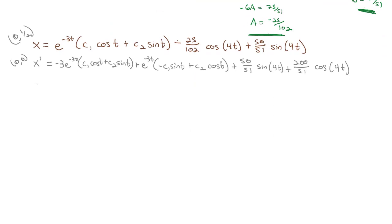Plugging those values in, in the first equation, we end up with 1/2 = c₁ - 25/102. So if I make this 51/102 + 25/102 = 76/102, which reduces to 38/51 = c₁.